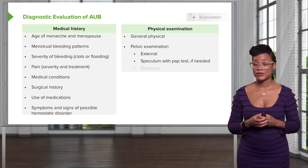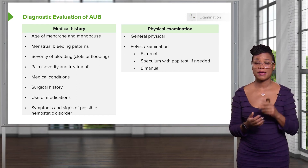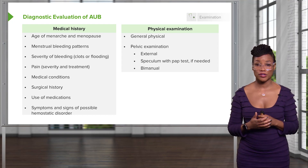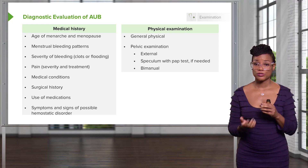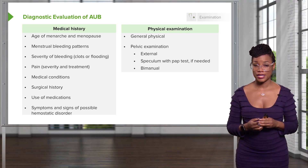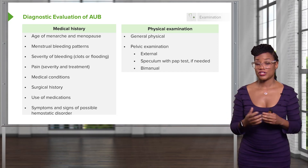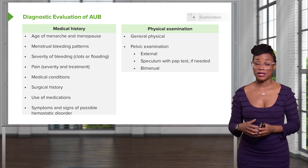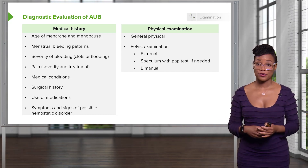We talk about Pap smears in another lecture. A bimanual exam needs to occur so that you can feel the cervix and make sure that it feels normal — it should feel like the tip of your nose. You should also do a bimanual to see how large the uterus is; we usually express that in terms of weeks. Does she have a 20-week size uterus? That could be an indication that she has fibroids, adenomyosis, or a combination.